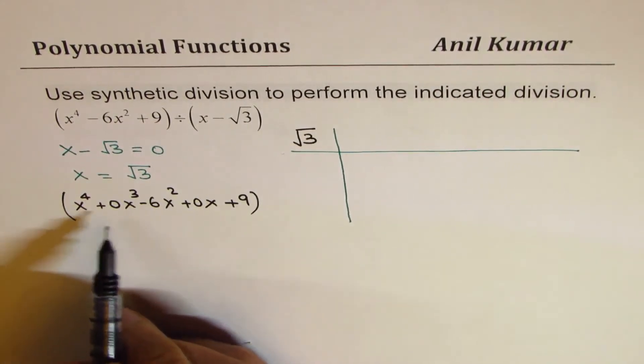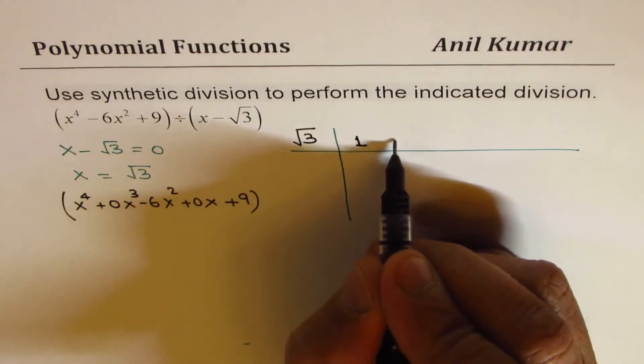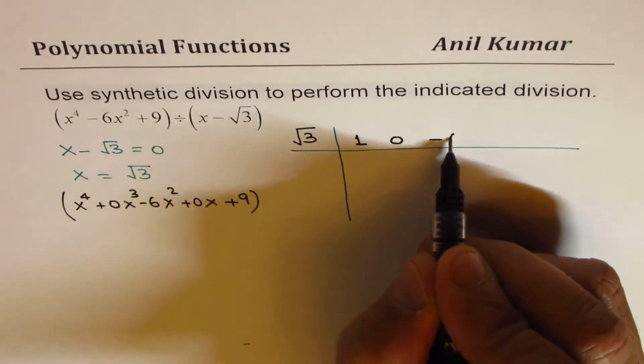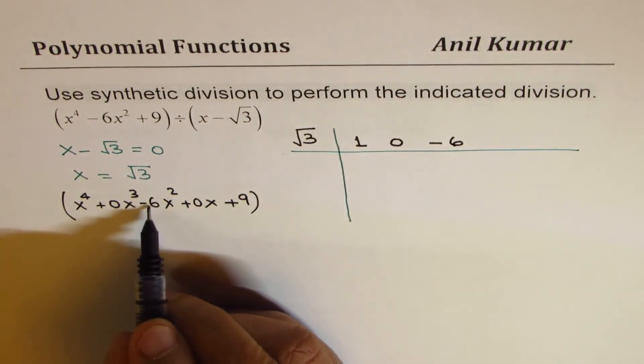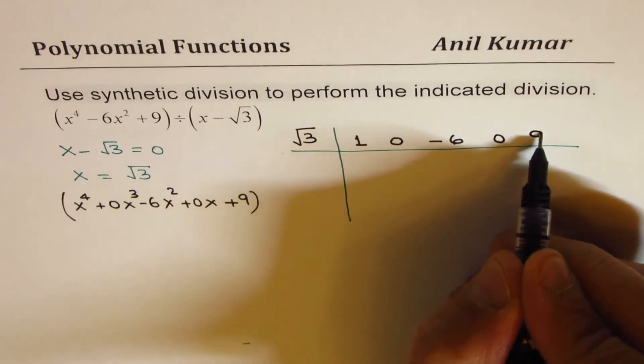So the coefficients here are 1, 0, minus 6, 0 and 9. So I will write here 1, 0, minus 6, 0 and 9. Perfect.